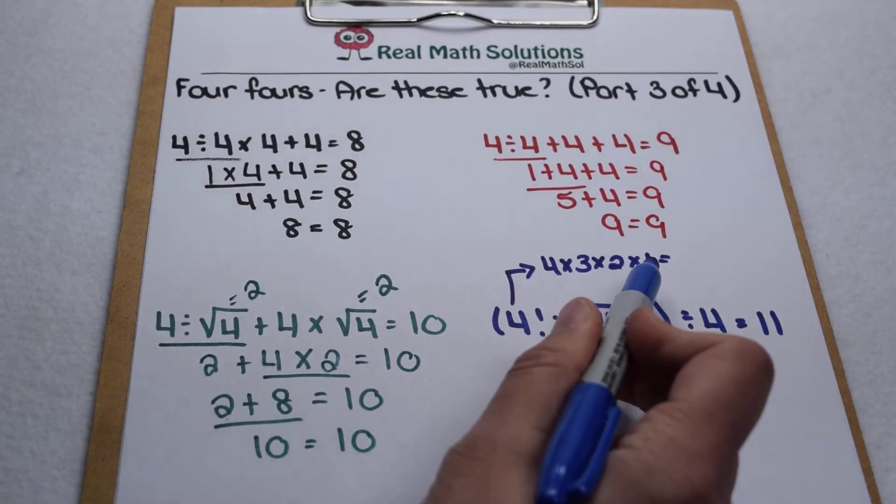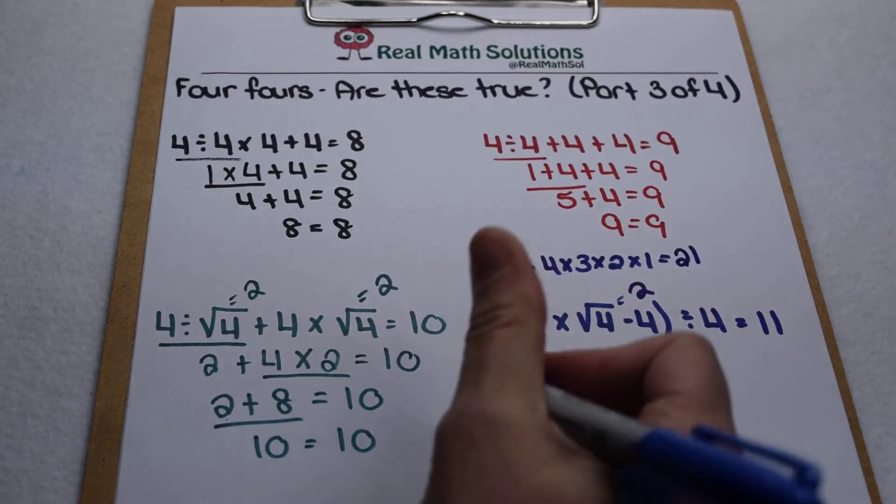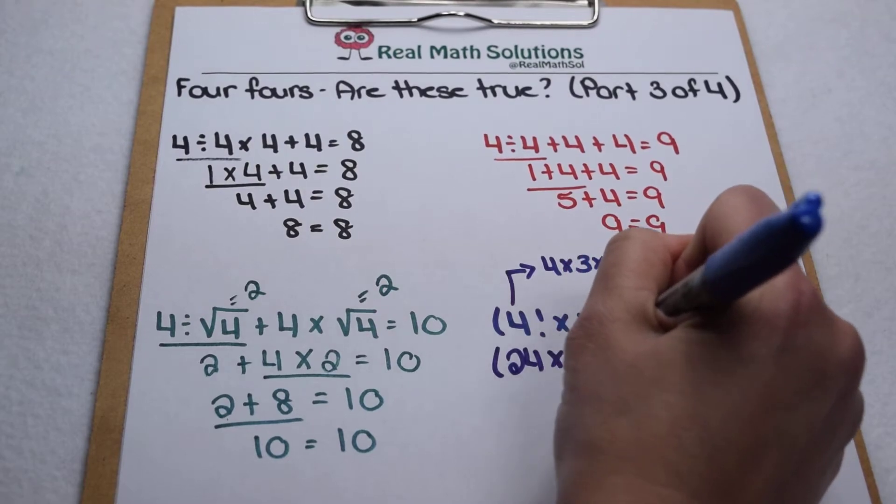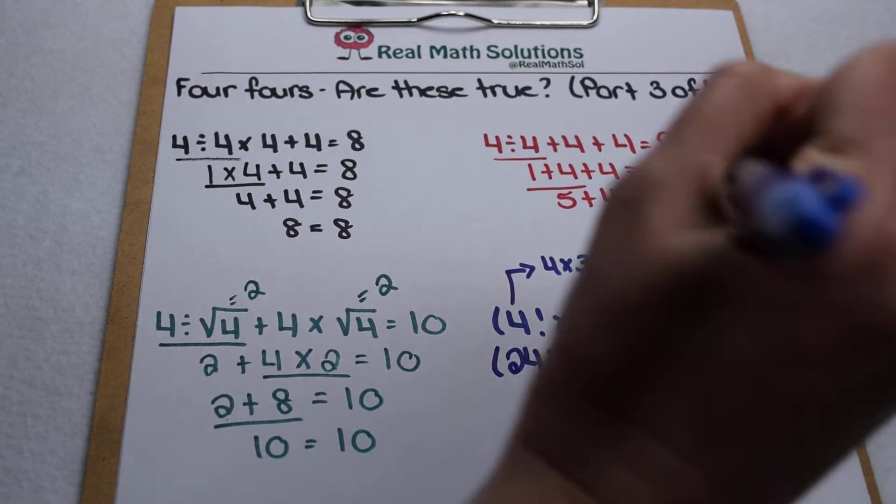12 times 2 is 24, 24 times 1 is 24. So that means inside our parentheses, we really have 24 times 2 minus 4, and then outside our parentheses divided by a 4.